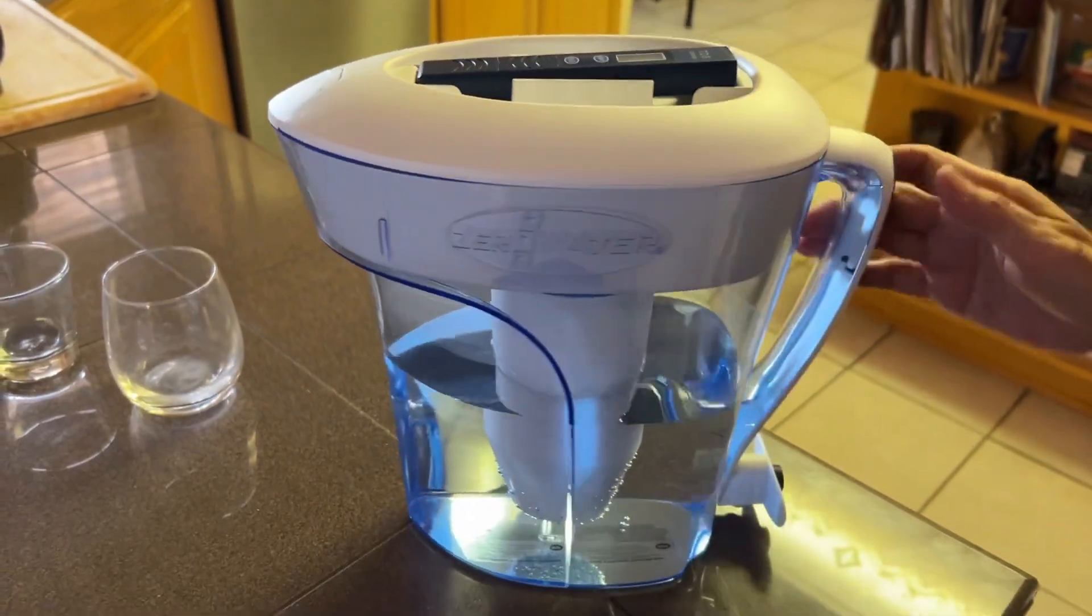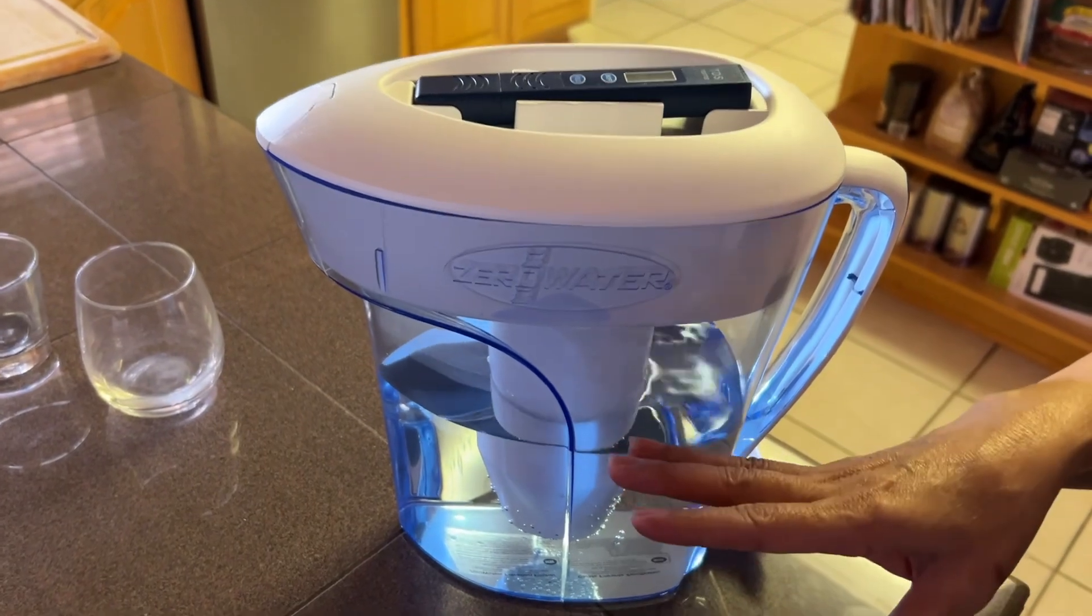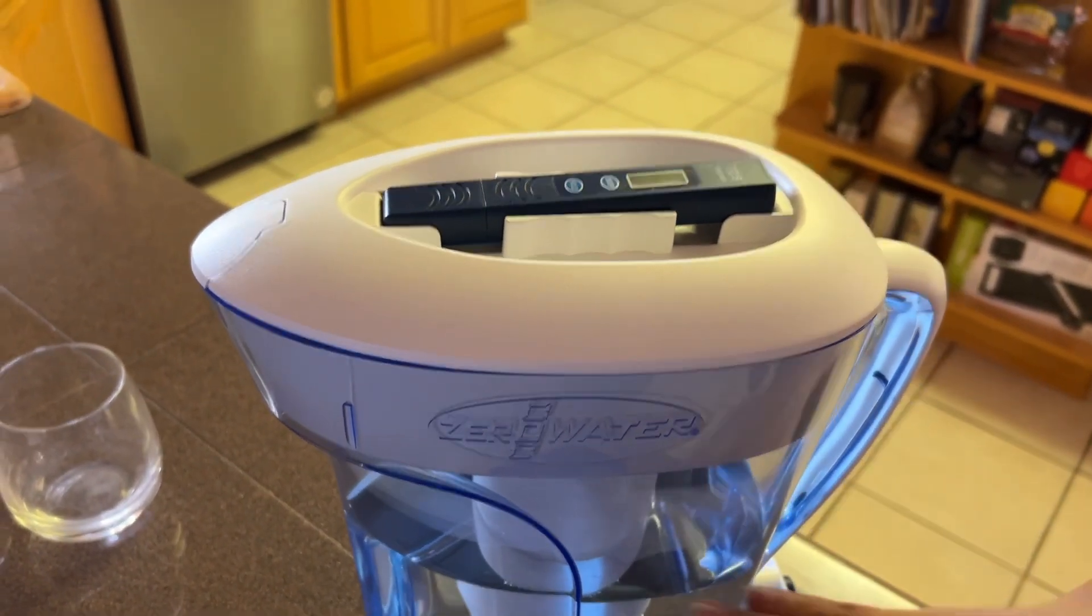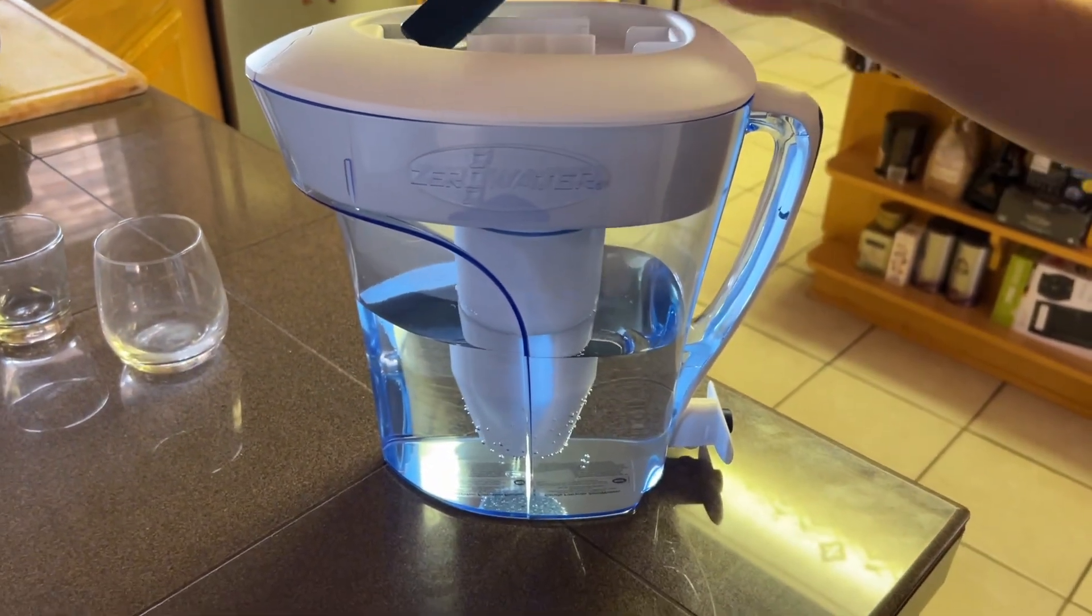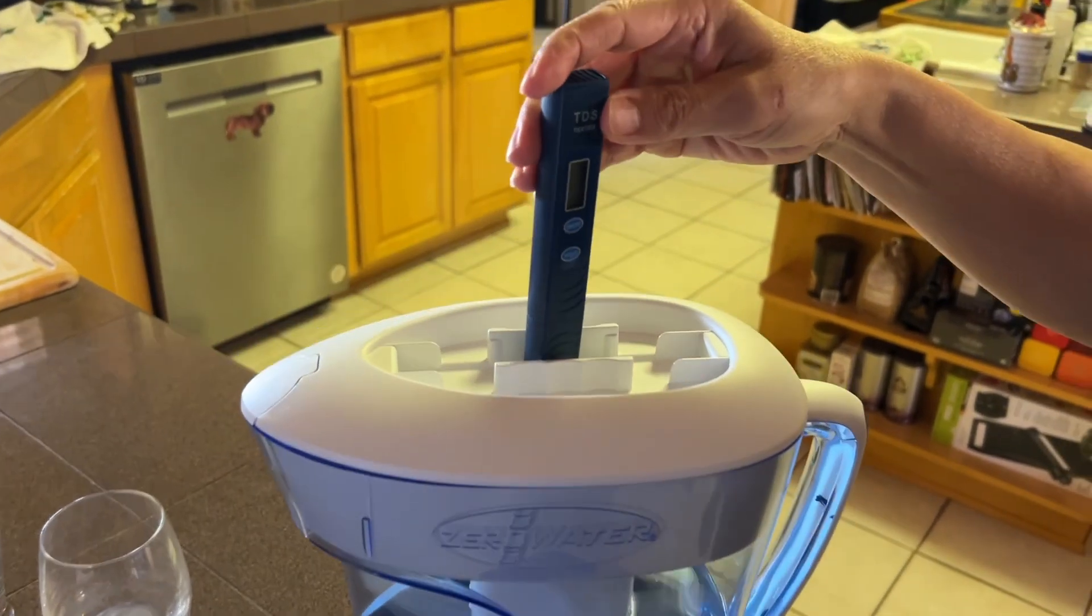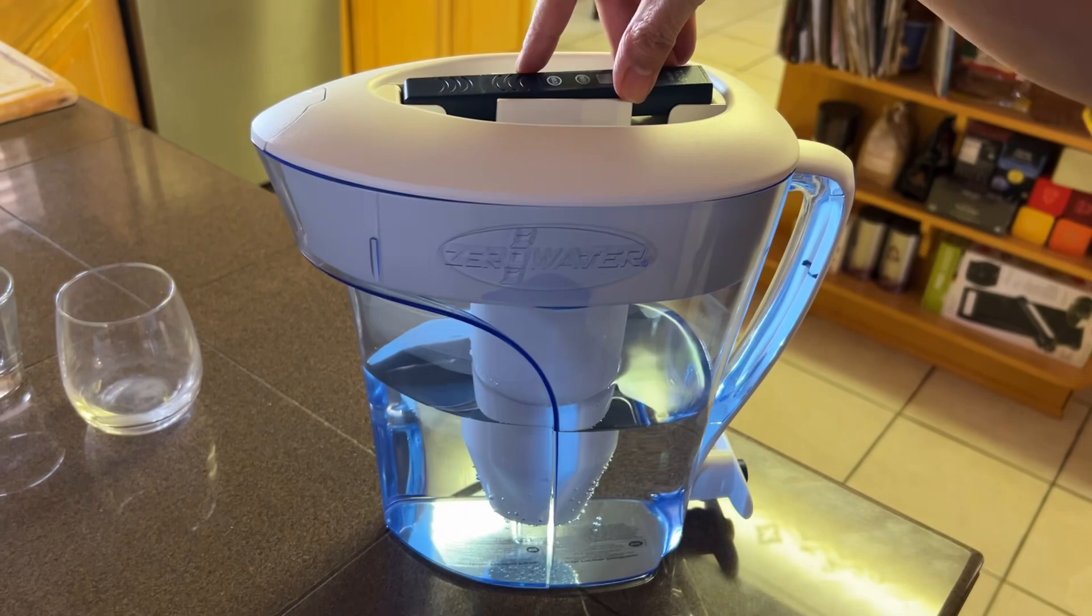Some of the things it removes through this filter: fine particles, metals, and solids. It comes with a meter so you know exactly how many solids are being removed. Just like in the name, you want to get it down to zero, and it does.